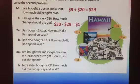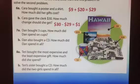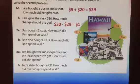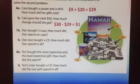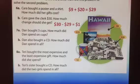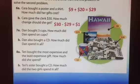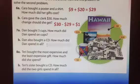Look at question 7. Dan bought 3 cups. How much did he spend on cups? The cup costs $2, so I need to do 3 times 2. 3 times 2 is 6, so Dan spent $6 on cups. Part B says Dan also bought a CD. How much did he spend in all? He spent $6 on cups, and the CD cost $15. 6 plus 15 is 21, so Dan spent $21 in all.